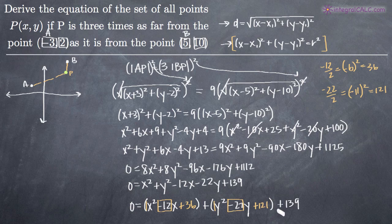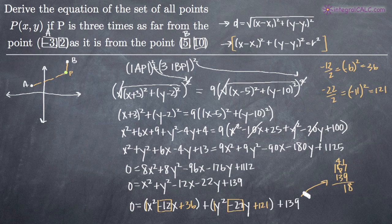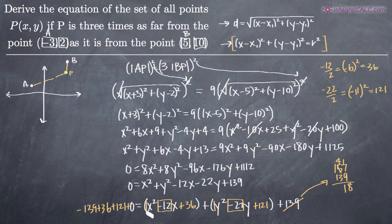One hundred and twenty-one plus thirty-six is one hundred and fifty-seven. Subtracting one hundred and thirty-nine from that, seventeen minus nine gives us eight, so we get eighteen. We've essentially used up all of the one hundred and thirty-nine except eighteen. Since we added thirty-six and one hundred and twenty-one to the right-hand side, we also add them to the left-hand side and subtract one hundred and thirty-nine from both sides, leaving us with eighteen on the left.